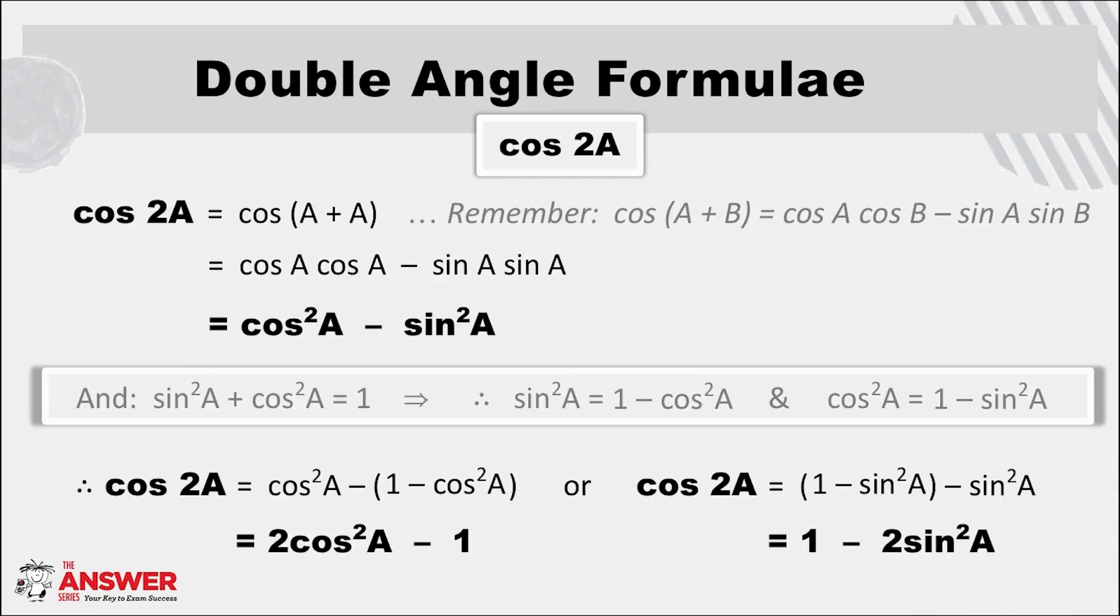There's a little more to what happens when we do the same process for cos. Again the first step is to change 2A to A plus A and expand using the cos compound angle formula for the sum of two angles. This expansion gives you cos squared A minus sine squared A.